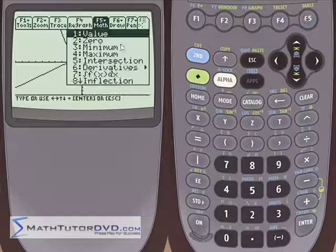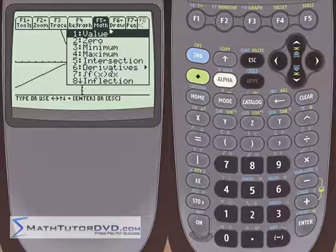So go ahead and hit F5, and you see a drop-down menu, and we're going to work our way through all of these functions here in the next several sections. The first one here is the value. What this is asking you or telling you is, what is the value of this function? So just hit enter here.